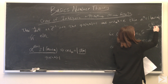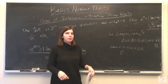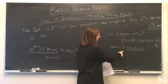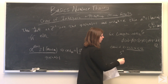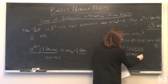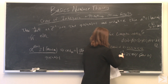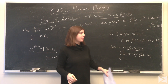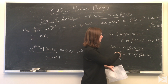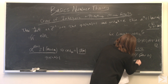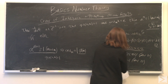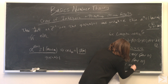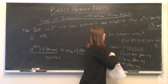We're solving for: 5 to the x is congruent to 1 mod 21, where x is the smallest integer that works. We'll test the possible values. 5 squared is 25, and that leaves a remainder of 4 when divided by 21, so 2 is not it. Then we'll try 3: 5 to the third is 125, and 126 is a multiple of 21, so this is congruent to negative 1. If we square both sides, we have 5 to the 6th congruent to 1, and 6 is our answer.